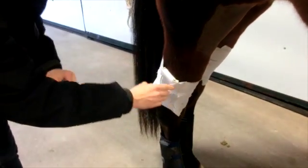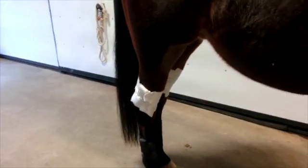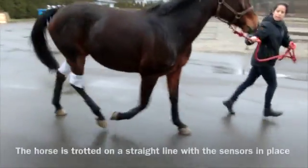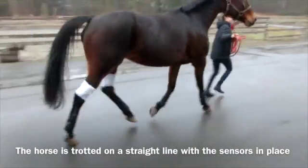Sensors are placed in all cannon bones and tibias just above the hock to measure displacement of the different segments on the leg and hock angles.